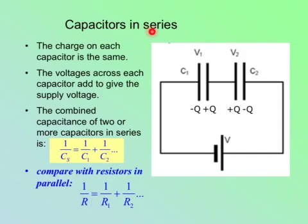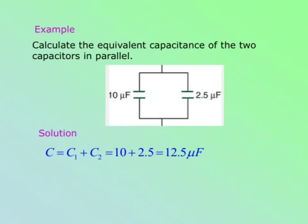Capacitors in series, like these two. Just remember this formula: 1 over Cs. Cs is the total capacitance for capacitors in series, and C1 and C2 are the individual capacitances. This formula looks similar to the formula for resistors in parallel.